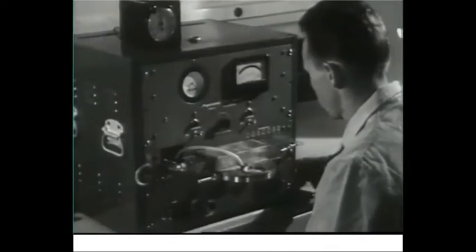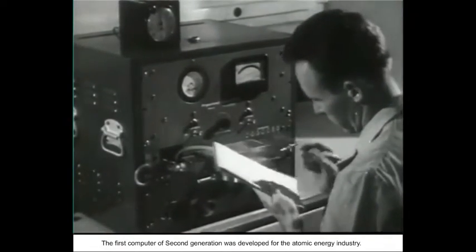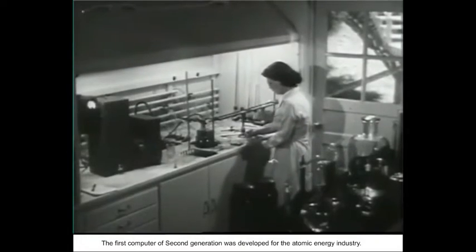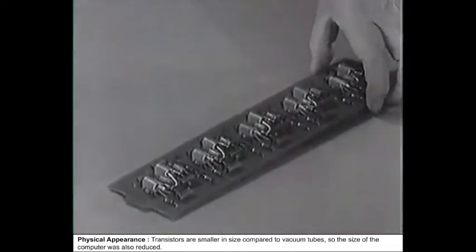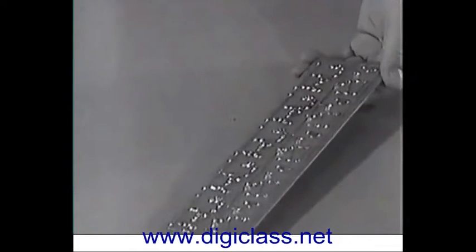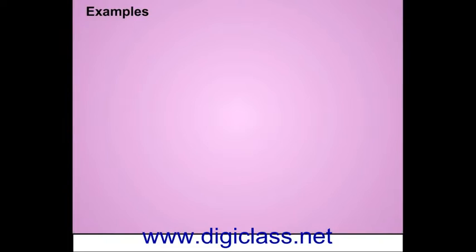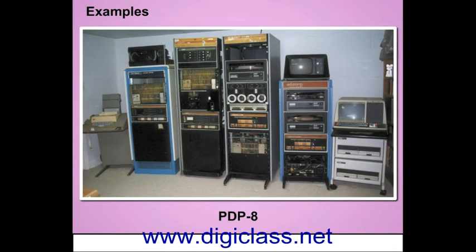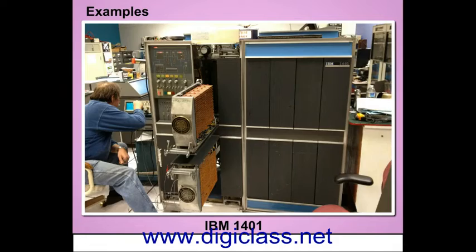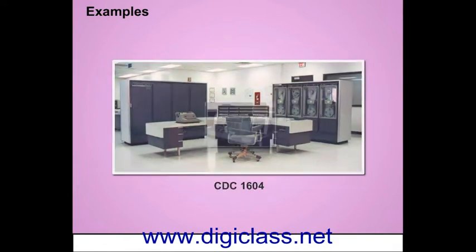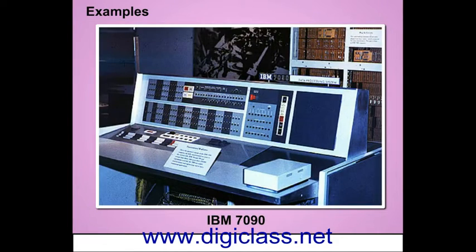The first computer of the second generation was developed for the atomic energy industry. Regarding physical appearance, transistors are smaller in size compared to vacuum tubes, so the size of the computer was also reduced. Examples include the PDP-8, IBM 1401, CDC 1604, and IBM 7090.